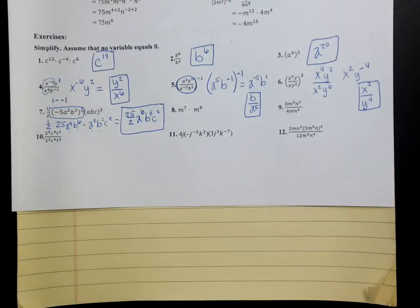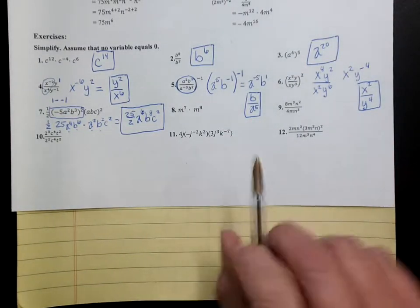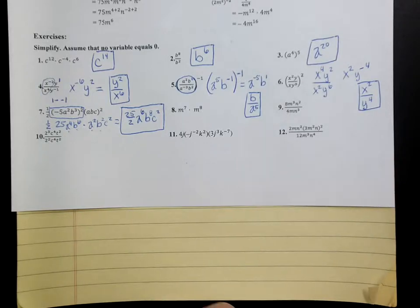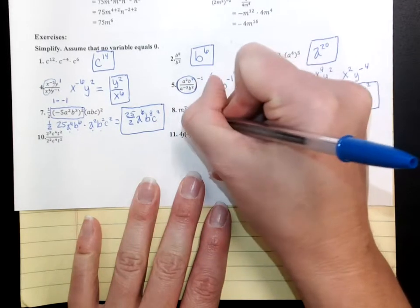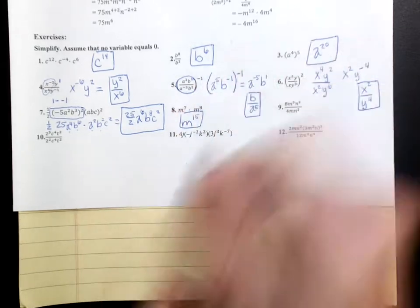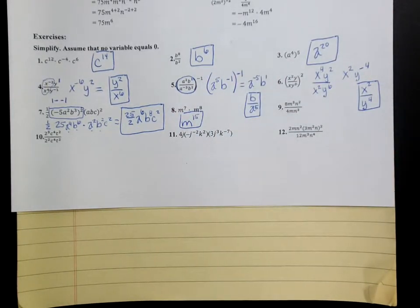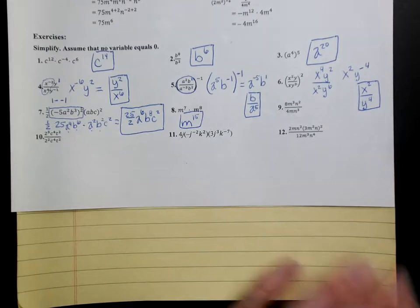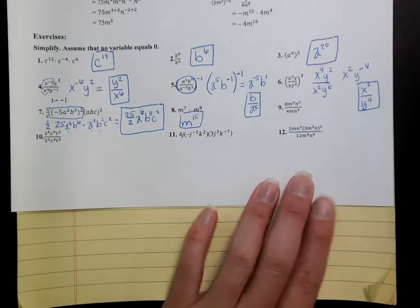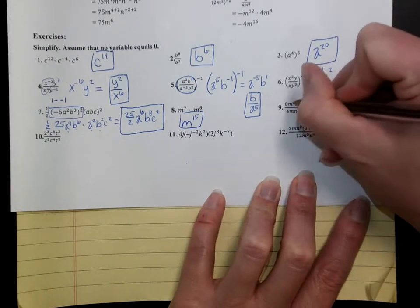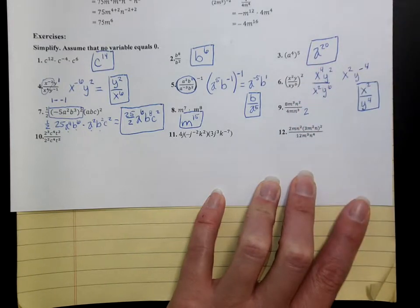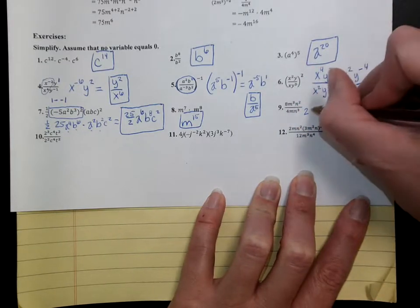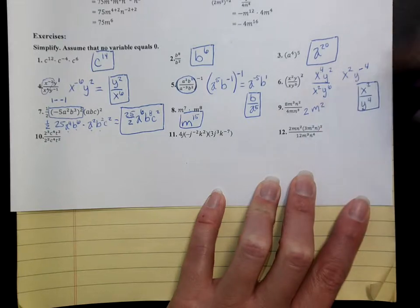Question 8 — we're throwing it back to an easy question. What do you do with your exponents there? You add them. m to the 15th. What about question number 9? Just a simple division question. 8 divided by 4 is 2. 3 m's divided by 1 m — I subtract those exponents — that's just going to be m squared.